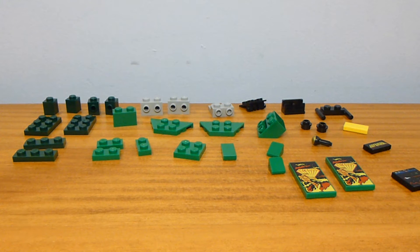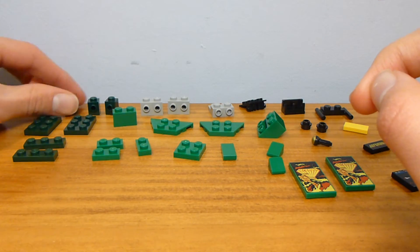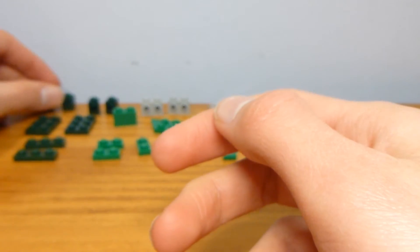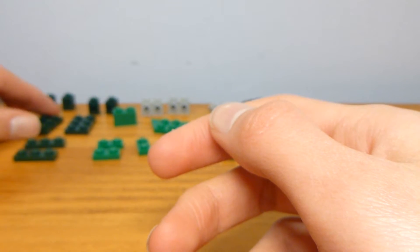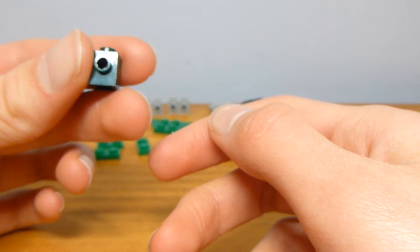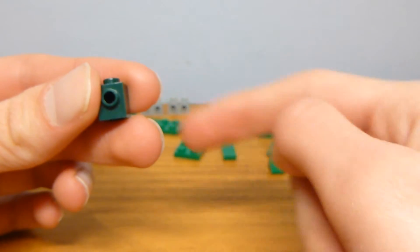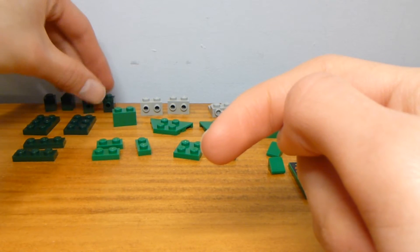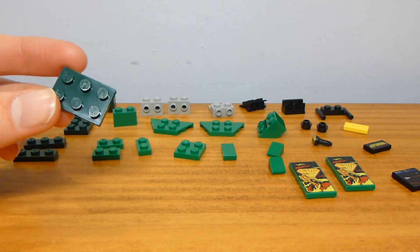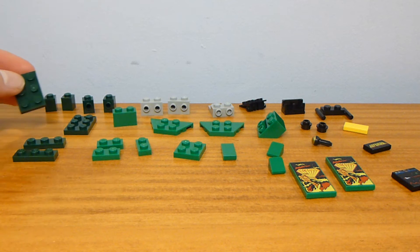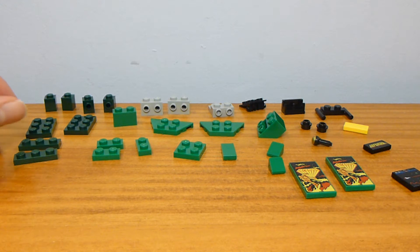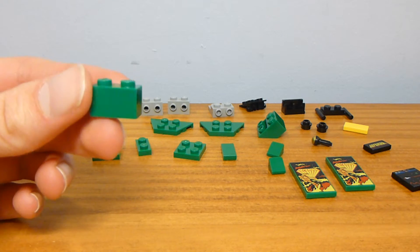The parts that you are going to need: you're gonna need two 1x2 bricks - actually, if I said 1x2 I meant 1x1 - two 1x1s with the one side stud, two 2x3 plates in that color, and two 1x3 plates.